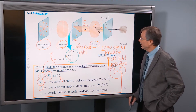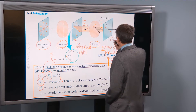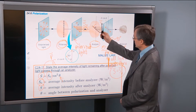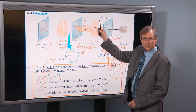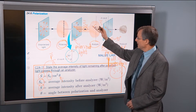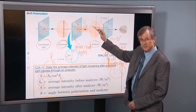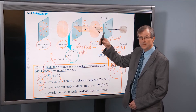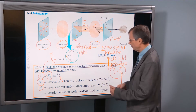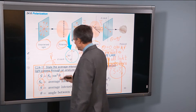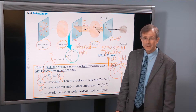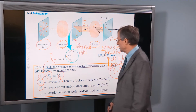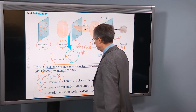What about the other case where θ equals 90? So now instead of the analyzer being in the direction of the polarization, it's 90 degrees to the polarization. What would you guess about how much of that light gets through? I think you'd guess that none of it would get through — and you would be absolutely right. If we put in 90 degrees, cosine of 90 is 0, and 0 squared is still 0, so none of the light gets through for 90 degrees.